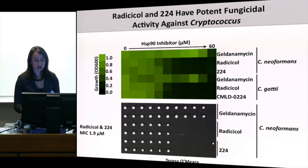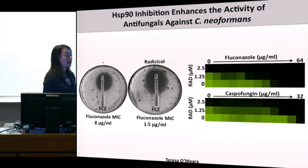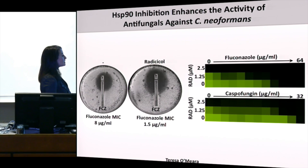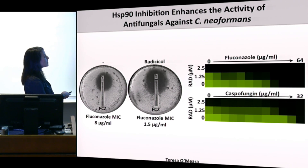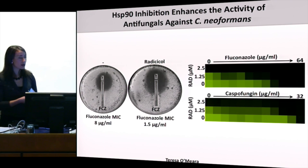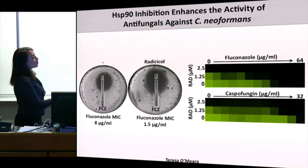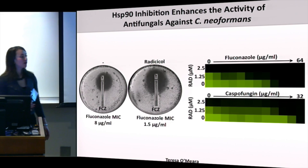These compounds also enhance the activity of existing antifungal drugs across all classes examined — azoles and echinocandins. In a petri dish E-test format with Cryptococcus neoformans, sensitive to fluconazole with an MIC of about 8 micrograms per ml on rich medium, a non-inhibitory concentration of radicicol increases susceptibility about five-fold. A low dose of radicicol can also enhance fluconazole and caspofungin activity. Since few compounds reduce caspofungin resistance of Cryptococcus, we think this is reasonably promising.